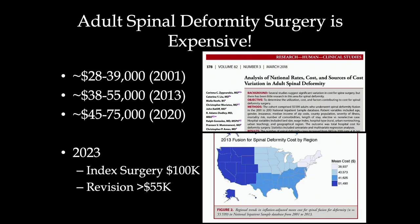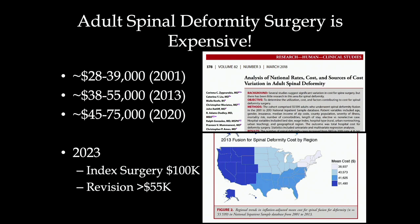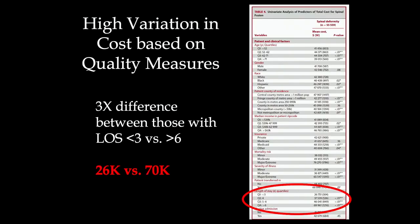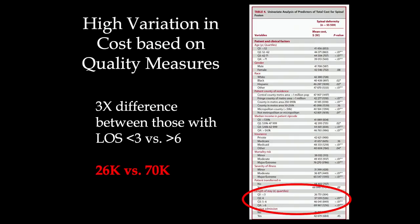Adult spinal deformity surgery is pretty expensive. In 2013, the cost of adult spinal deformity could have ranged anywhere from $38,000 to $55,000. And today it's probably somewhere around $50,000 to $80,000. Revision surgery could cost half as much or even more than the index surgery. If we look at cost variation, there's a three times difference between patients who have a length of stay less than three days versus greater than six days — anywhere from $25,000 to over $70,000.